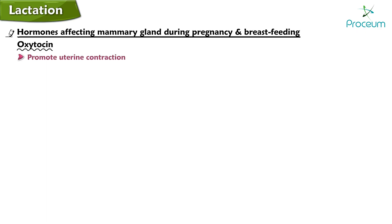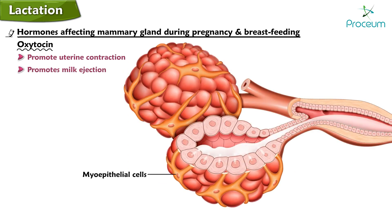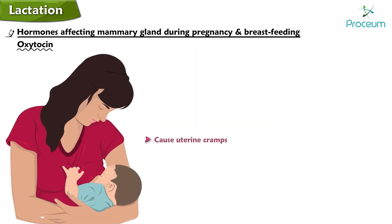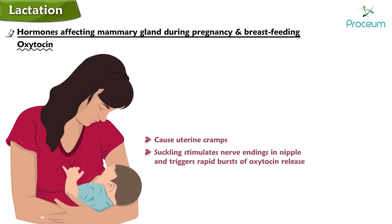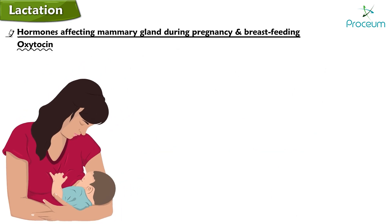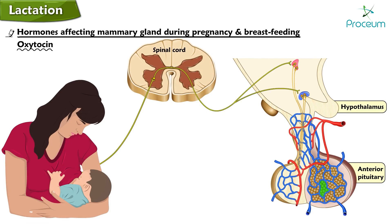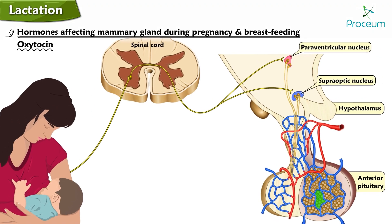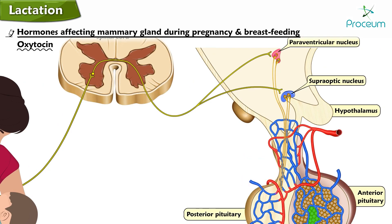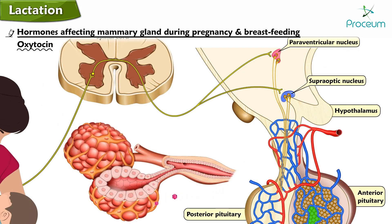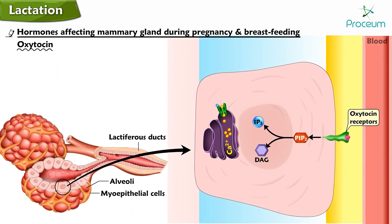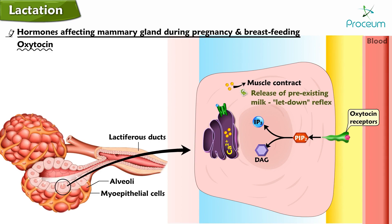Oxytocin, which can promote uterine contraction, also promotes milk ejection by stimulating the contraction of the network of myoepithelial cells surrounding the alveoli and ducts of the breast — the galactokinetic effect. During suckling, stimulation of nerve endings in the nipple triggers a rapid burst of oxytocin release via a neurogenic reflex transmitted through the spinal cord, midbrain, and hypothalamus, stimulating neurons in the paraventricular and supraoptic nuclei to release oxytocin from the posterior pituitary. Oxytocin then enters the systemic circulation, reaching myoepithelial cells on the lactiferous ducts and around the alveoli, causing them to contract and promoting release of pre-existing milk — the letdown reflex.